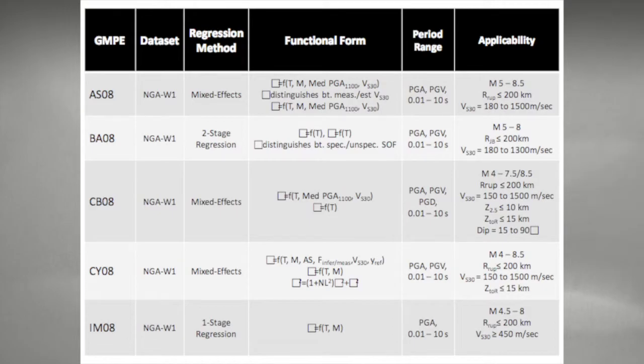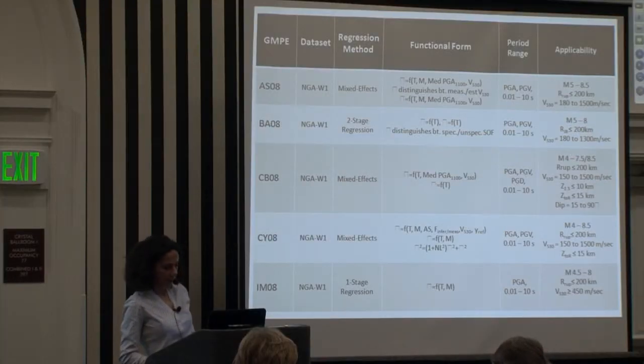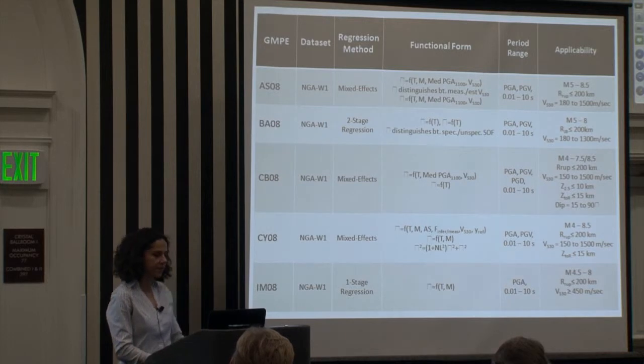All these models use NGA West 1 data. They are applicable for a range of periods from 0.01 to 10 seconds, including PGA and PGV, magnitude 5 to about 8 to 8.5, distance up to around 200 kilometers, VS 30 from around 180 to 1500 meters per second.